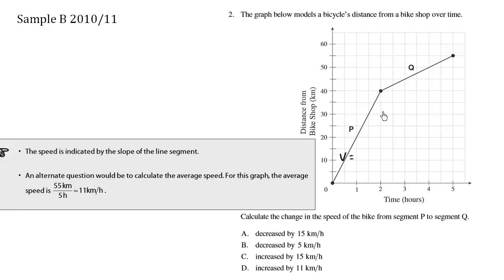The velocity equals rise over run. The rise here is 40 over the run which is 2, so the velocity is 20 kilometers per hour.